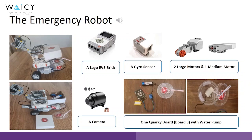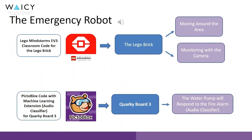For the emergency robot, we use a Lego EV3 brick, a gyro sensor, two large motors and one medium motor, a camera, one QR keyboard — which is board 3 — with a water pump.